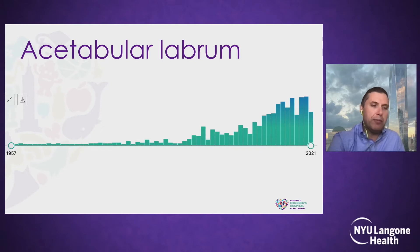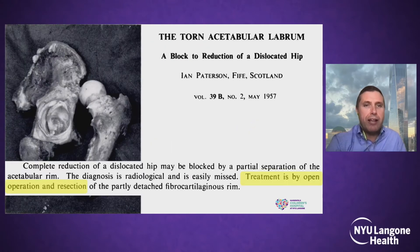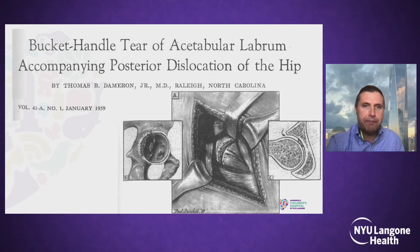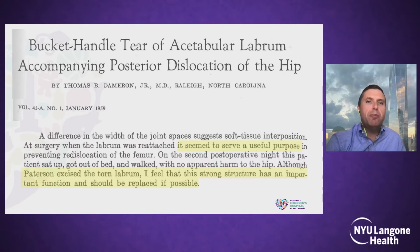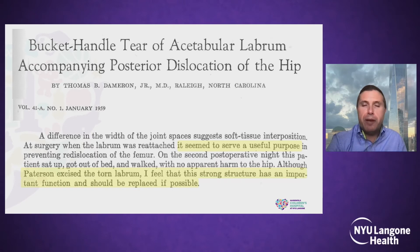References to the acetabular labrum have also grown exponentially, although they're not quite as extensive as those looking at the fruit fly. The first one I can find was by a Scottish gentleman named Ian Patterson, who in 1957 mentioned treating a torn acetabular labrum by open operation and resection. A couple of years later, Thomas Dameron in North Carolina reported in the JBJS that it seemed to serve a useful purpose and felt this strong structure had an important function and should be replaced if possible. Perhaps this is the genesis of the repair versus resect debate.